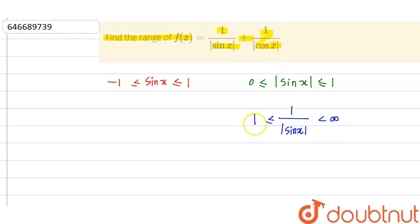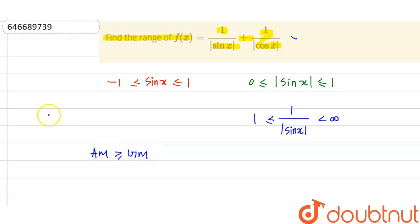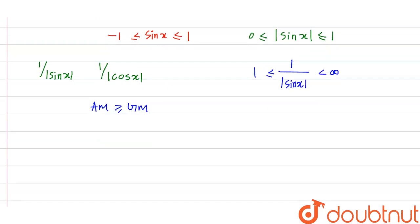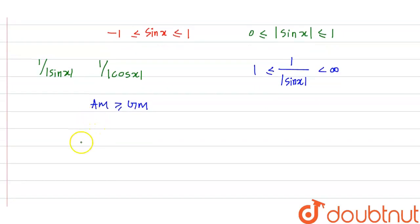Before finding the range of this function, we apply AM ≥ GM. We apply AM-GM between the two terms: 1/|sinx| and 1/|cosx|.